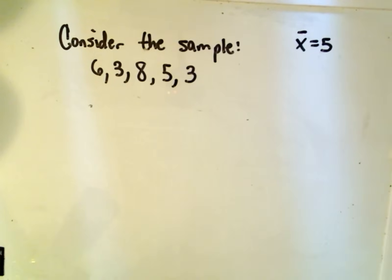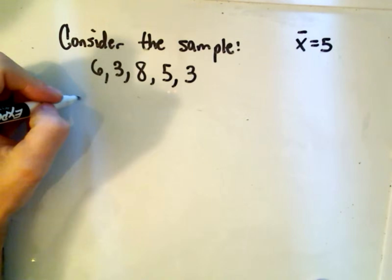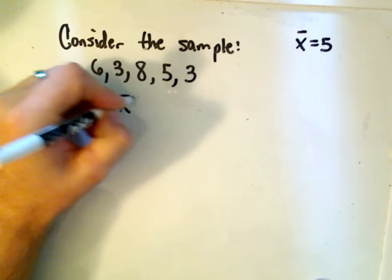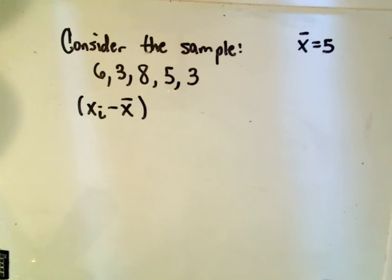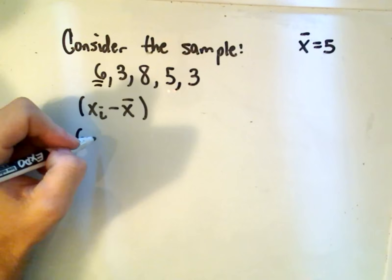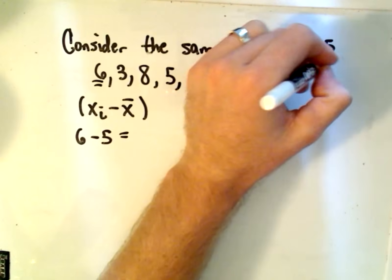From that now, we have to calculate. So in our formula, we have the x sub i minus x bar. All that means is you take every number and subtract away what x bar is.